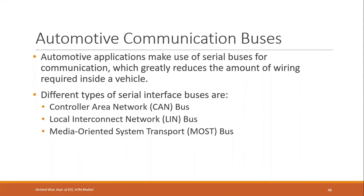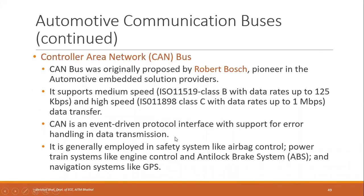For proper communication between embedded systems in a vehicle, automotive communication buses are used. Automotive applications make use of serial buses for communication, which greatly reduces the amount of wiring required inside a vehicle compared to parallel communication. There are three types of serial interface buses used in the automotive domain: the Controller Area Network (CAN) bus, the Local Interconnect Network (LIN) bus, and the Media Oriented System Transport (MOST) bus.